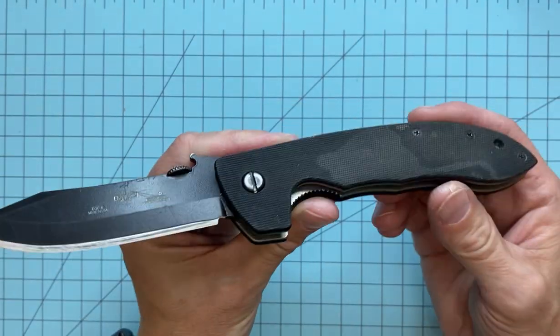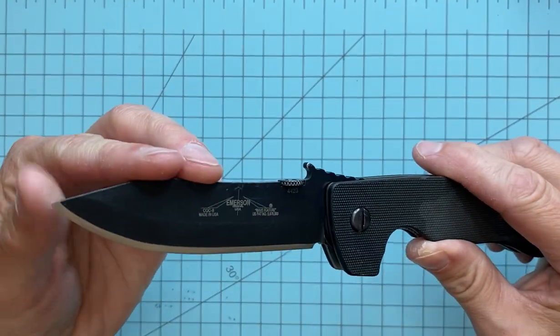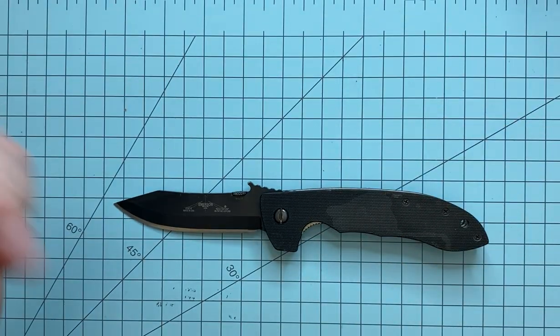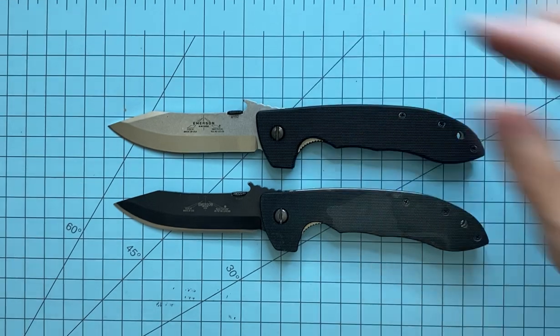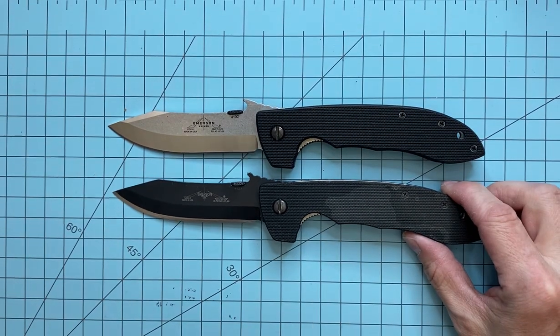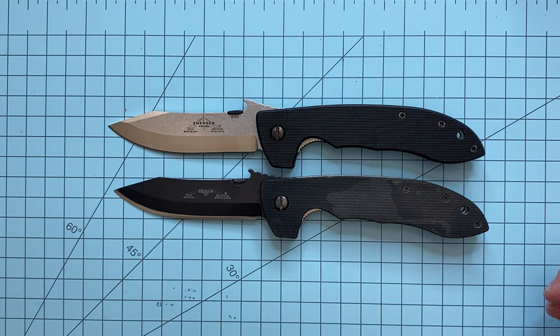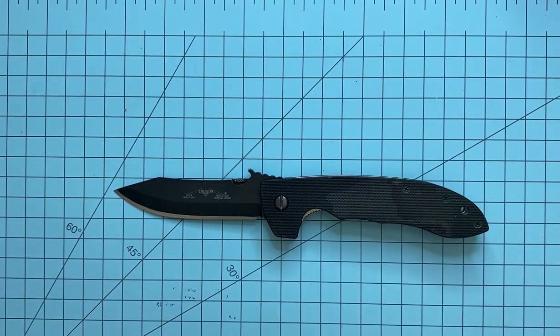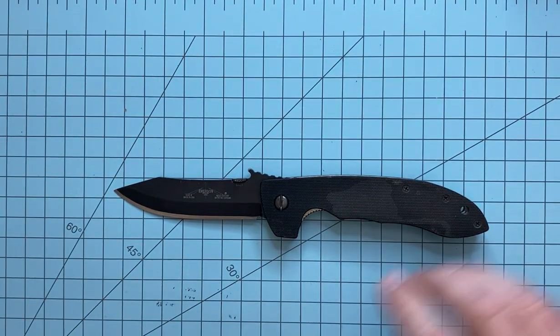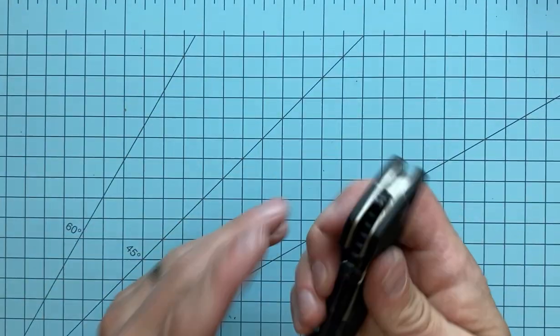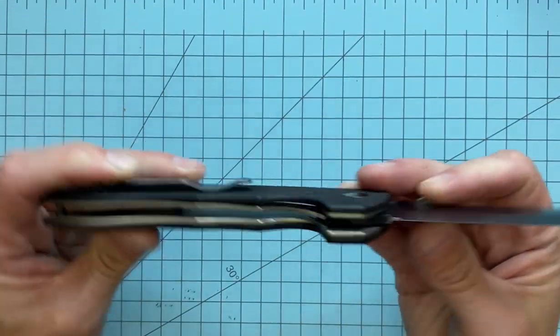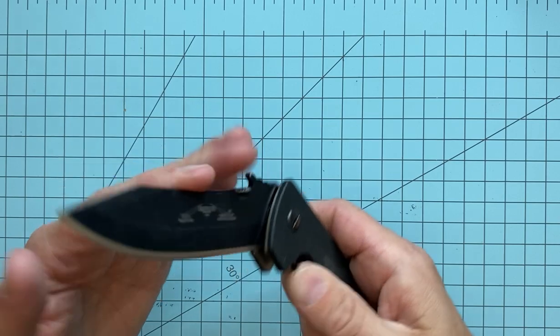So this is the knife right here, and it's definitely got some miles on it. It's well loved. Here's a new CQC8 right there. So you can tell right off the bat, he's lost a little bit of blade length just from use and sharpening and everything else. So that's pretty cool. It's one of those things where it's kind of a badge of honor with a lot of knives, Emerson's especially, I would say. So yeah, he's definitely been getting a lot of use out of this.